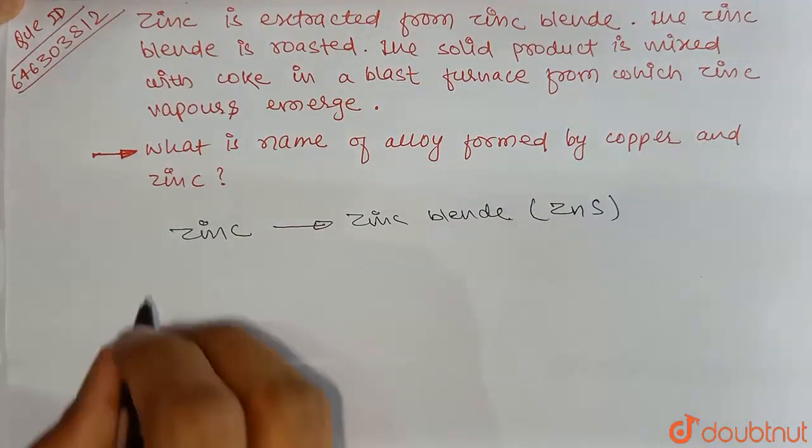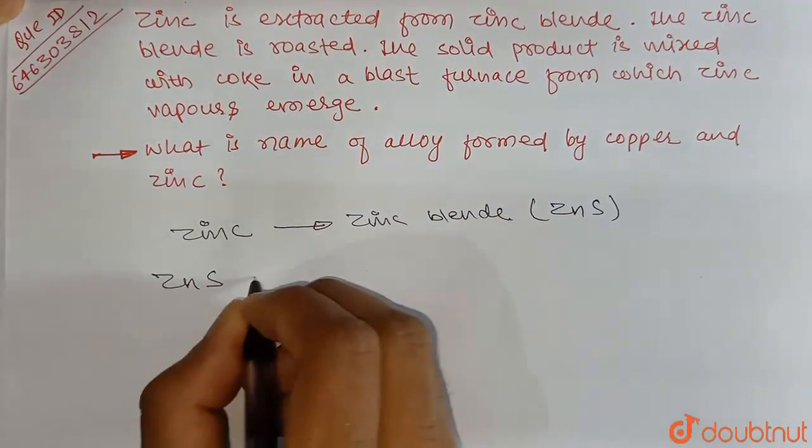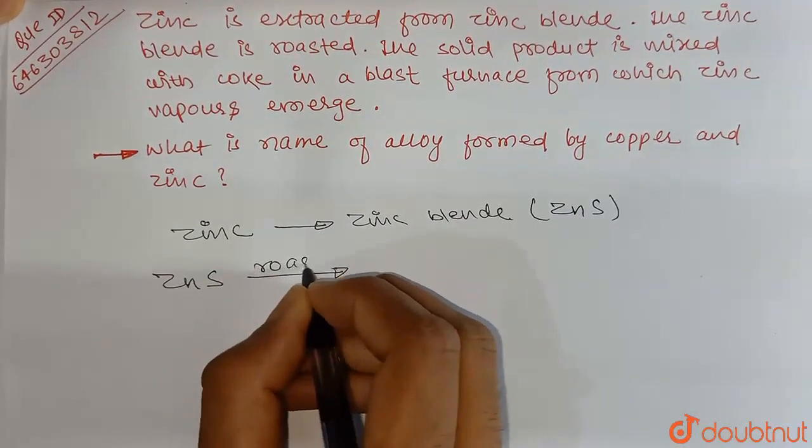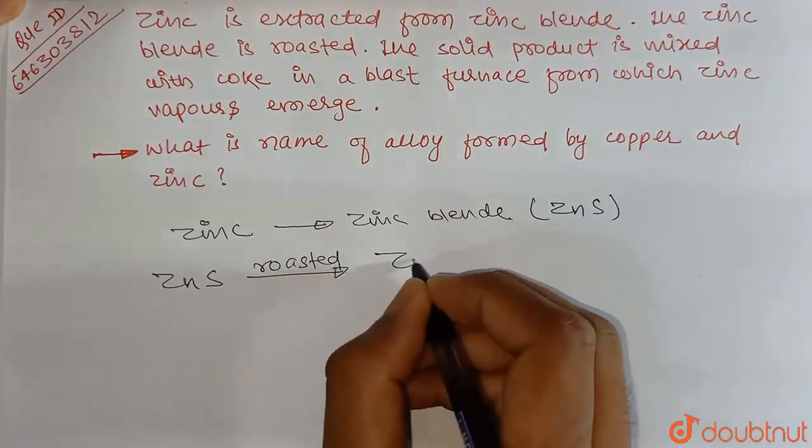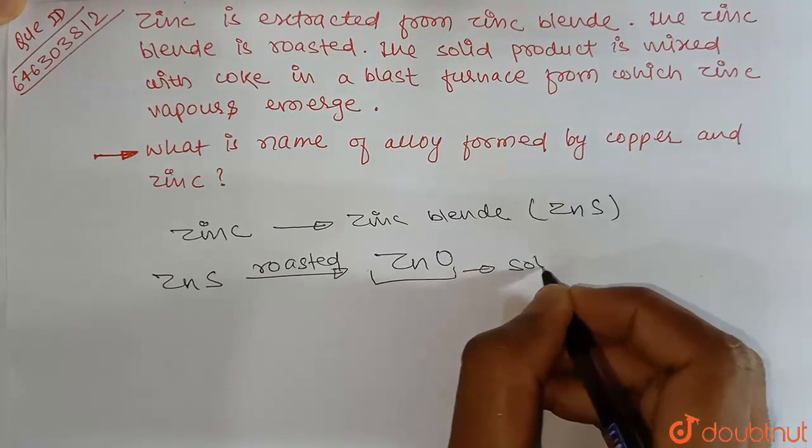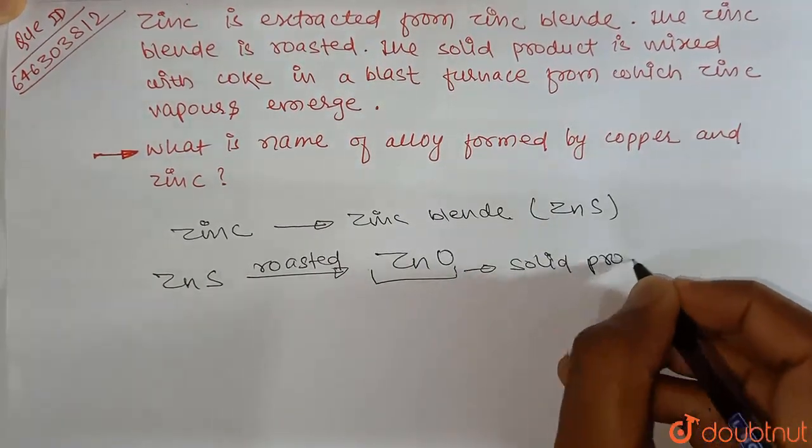The zinc blend is roasted. The ZnS is basically roasted and it's converted to zinc oxide. That is solid product, a solid product.